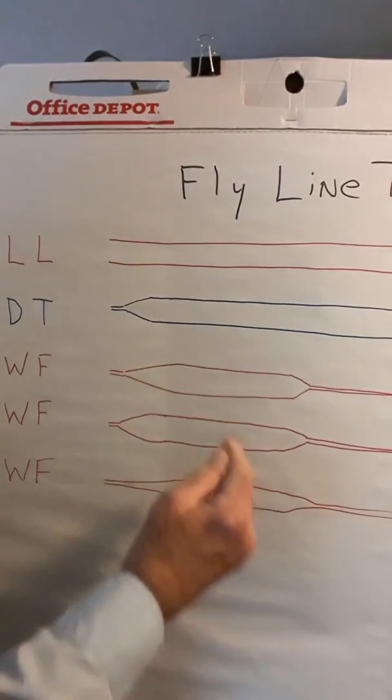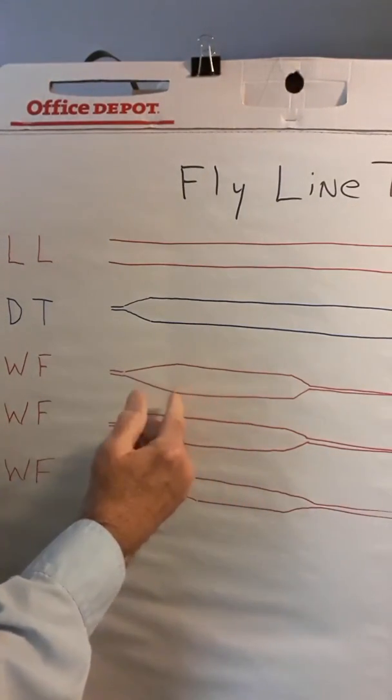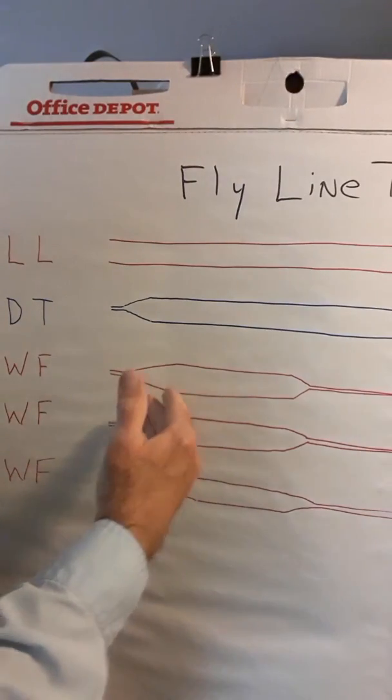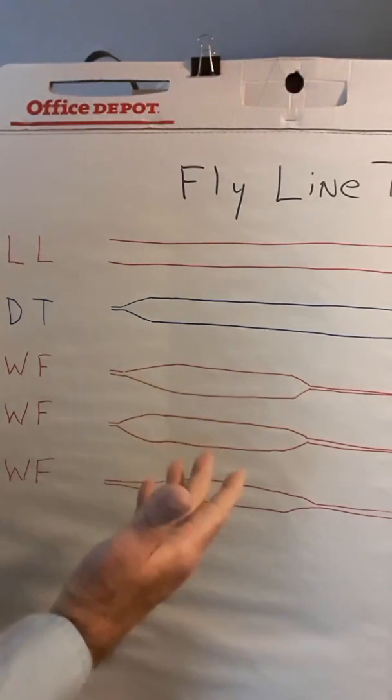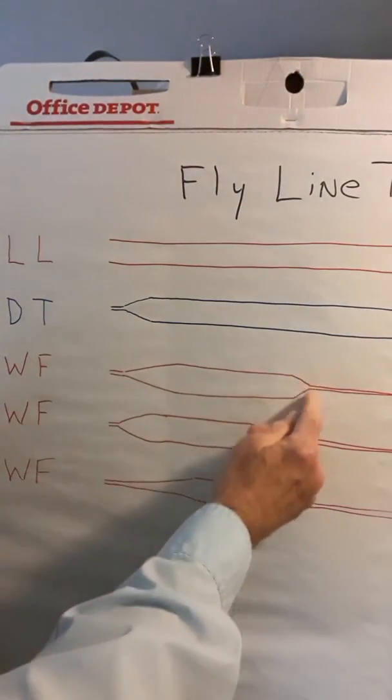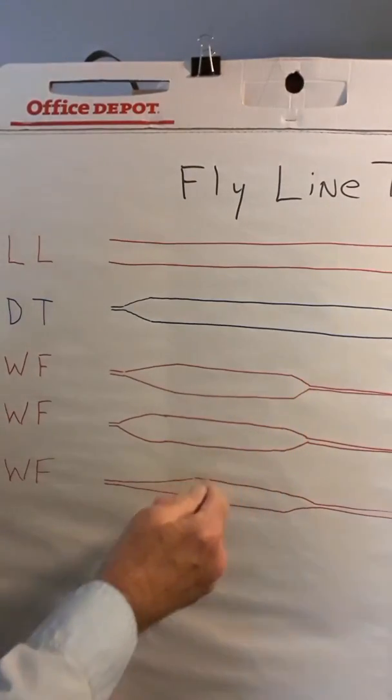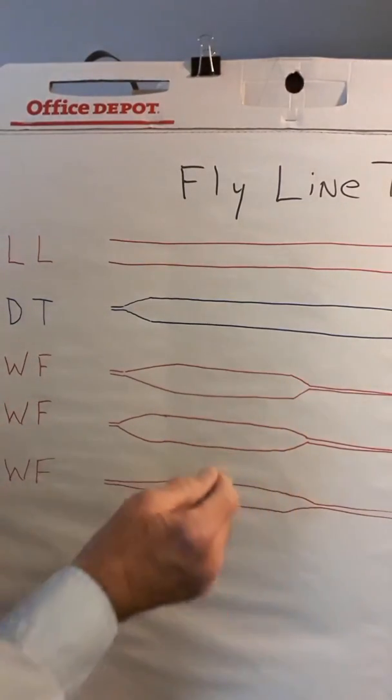This head will vary in length depending on what fishing conditions the manufacturer designs them for. You'll find that they vary anywhere from 25 to 55 feet in length as far as the length of the head. The advantages to that we'll get into in a minute.